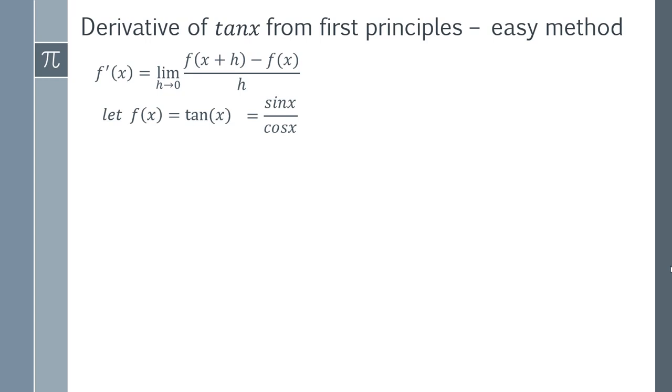And it's going to be easier to work with this in the long run. We then need to find f of x plus h. And we simply substitute x plus h in place of x. And likewise, we're going to get sin over cosine, but this time it's going to be x plus h.